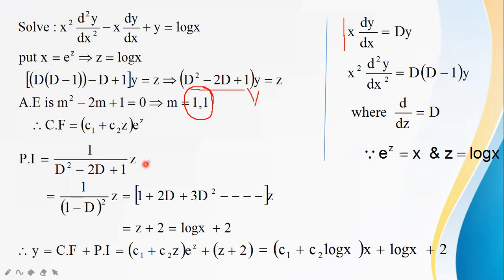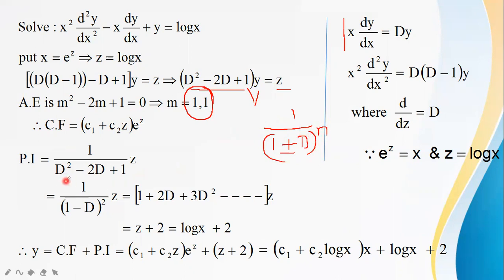For PI: PI = 1/f(D) · Q(z), where Q(z) = z. We use the shortcut method — taking the least degree term common and converting into the form 1/(1 ± D)^n. So we write (1 − D)^−2, and expand as 1 + 2D + 3D² + ...